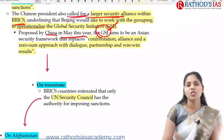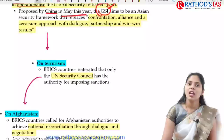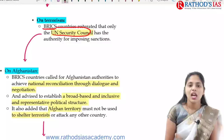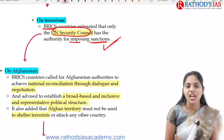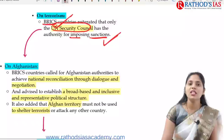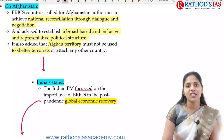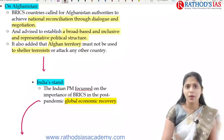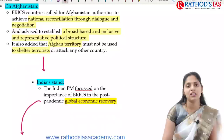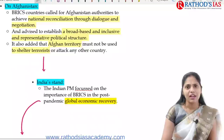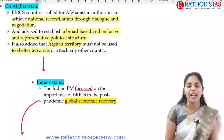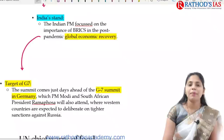On terrorism, BRICS countries say that only the United Nations Security Council has the authority for imposing sanctions. On Afghanistan, BRICS countries called for Afghanistan's authorities to achieve national reconciliation through dialogue and negotiation. They also stated that Afghanistan's territory should not be used to shelter terrorists or to attack any other countries.